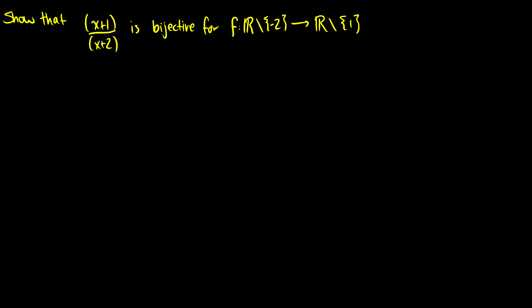For the second problem, we want to show that f(x) = (x + 1)/(x + 2) is bijective, mapping from ℝ \ {−2} to ℝ \ {1}. This will work — we won't run into any domain or range restrictions. First, we show injectivity: starting with f(x) = f(y), we need to show x = y. So we have (x + 1)/(x + 2) = (y + 1)/(y + 2).